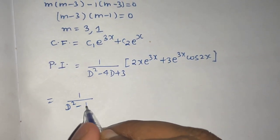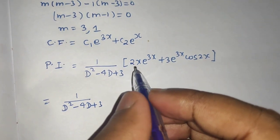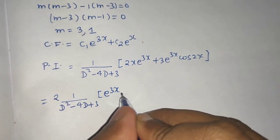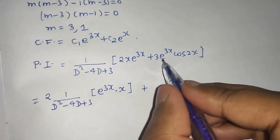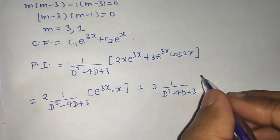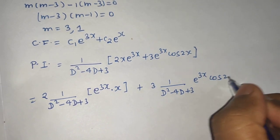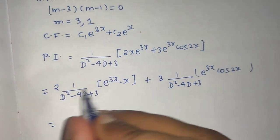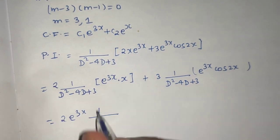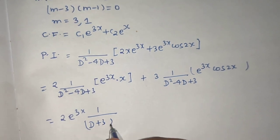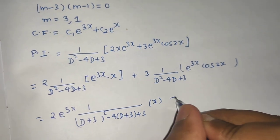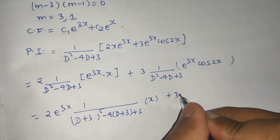Let's break this up. We have 1/(D² - 4D + 3). Take 2 out as a constant; this operates on e^(3x)·x. Plus take 3 out, and 1/(D² - 4D + 3) operates on e^(3x)·cos(2x). Now replace D with D+3, since a = 3, giving (D+3)² - 4(D+3) + 3 operating on x in the first term.